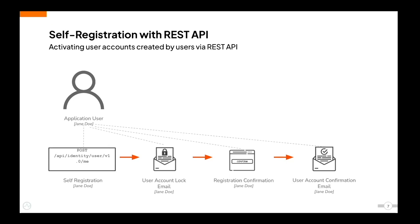WSO2 Identity Server also enables self-user registration via a REST API. In this approach, instead of an administrator, the user will self-register in the system via the REST API, upon which a locked account gets created. The information about this locked account will be emailed to the registered email ID with the confirmation link. Once the user confirms the account creation, an account creation confirmation email will be sent to the user's registered email ID.